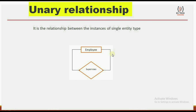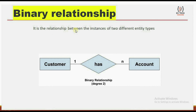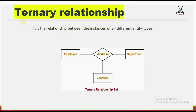Binary relationship: it is the relationship between instances of two different entity types. For example, customer is one type of entity and account is another type of entity. The 'has' relationship associates these two different entity types — this is known as a binary relationship. Ternary relationship: it is the relationship between the instances of three different entity types. For example, 'works in' is a relationship in which the department, location, and employees — three different entities — participate. This is known as a ternary relationship.